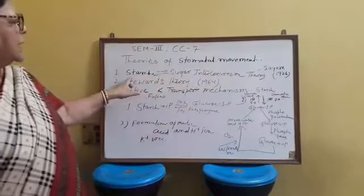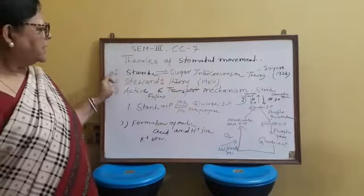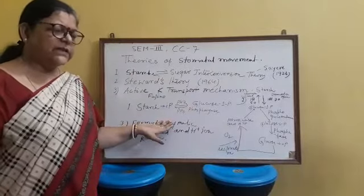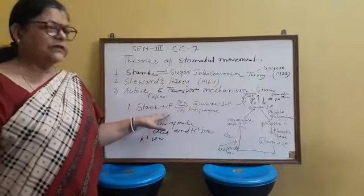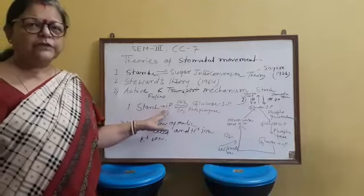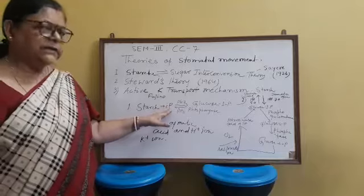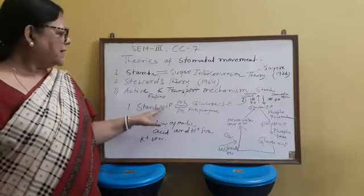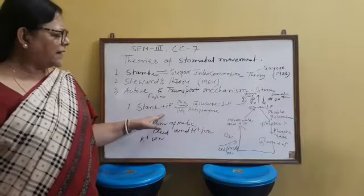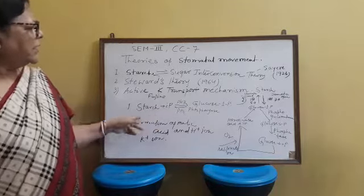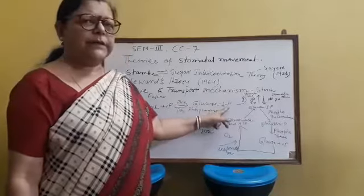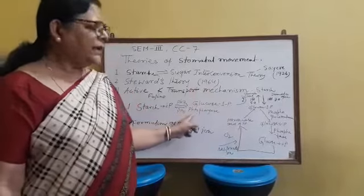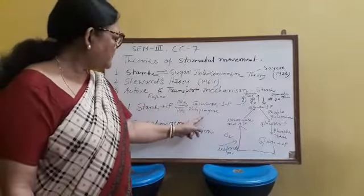The updated theory introduced the idea that inorganic phosphate is involved. When starch is broken down, inorganic phosphate is incorporated, forming glucose-1-phosphate. This process is regulated by the enzyme phosphorylase.